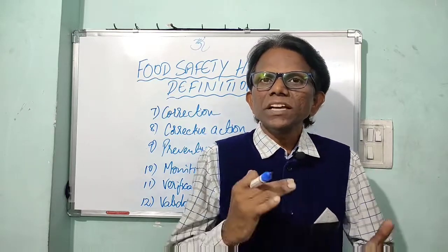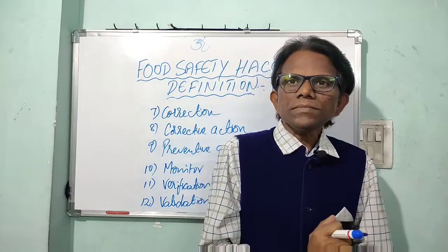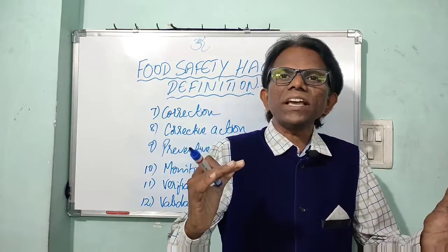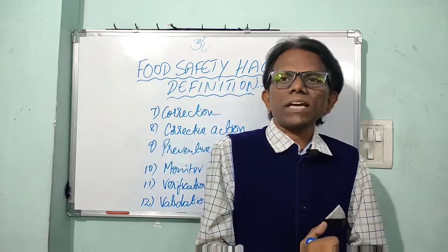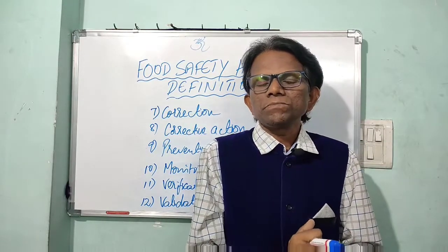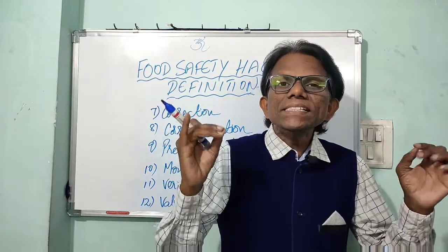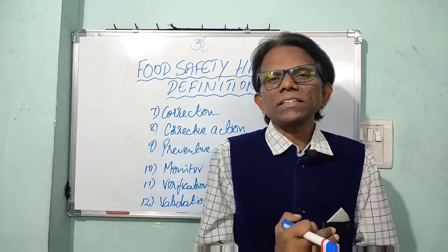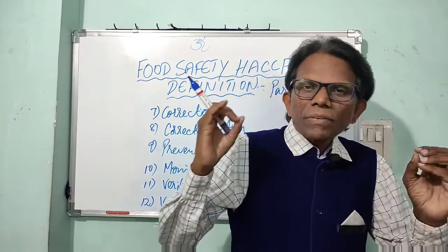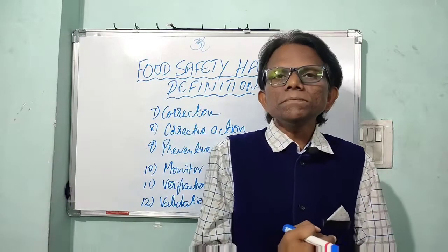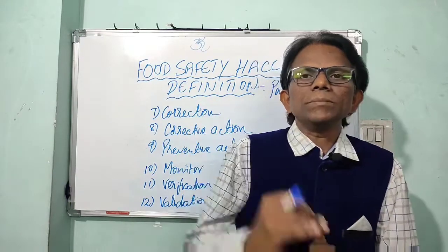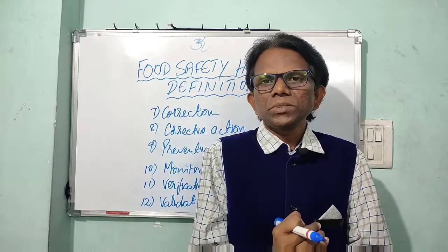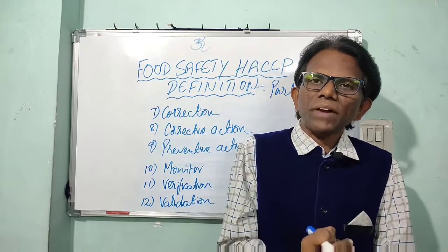What is corrective action? It is not taken in a timely manner. If unsanitary conditions exist for an extended period of time, we must take corrective actions. Whenever a deviation occurs from a critical limit, we have to take corrective actions. So whenever there is a deviation or failure to meet the critical limits, then corrective action must be taken.